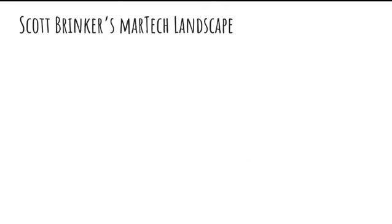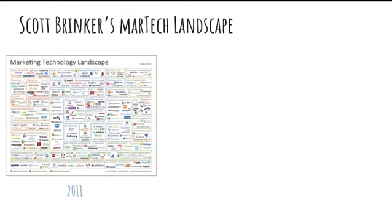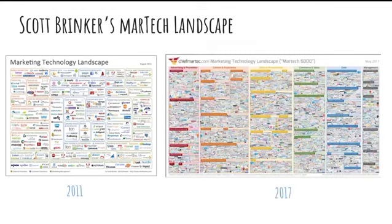In 2011, Scott Prinker, who was the number one MarTech influencer, released the famous MarTech landscape, which documented this entire process and listed all the DSP and SSP vendors and other important vendors in the space — a total of 100 vendors. Just recently he released the landscape for 2017, which includes 5,000 vendors and gives us a great understanding of how this rapidly evolving ecosystem functions.